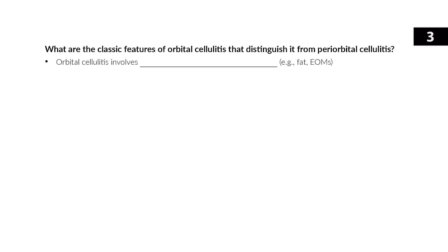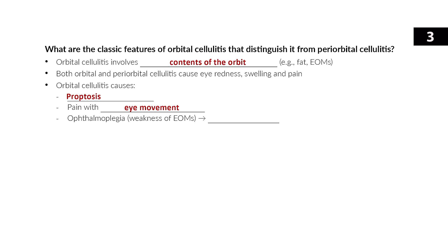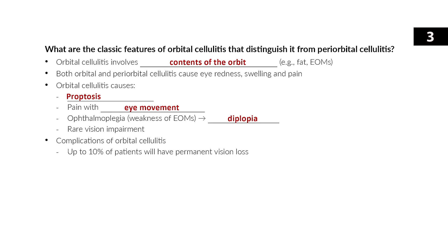Infection of the tissue around the eye can be orbital cellulitis or periorbital cellulitis. Periorbital cellulitis involves just the skin in front of the eye like the eyelid, while orbital cellulitis involves the contents of the orbit itself — the fat and extraocular muscles. Both present with redness, swelling, and pain, but orbital cellulitis may also cause proptosis, pain with eye movement, ophthalmoplegia, diplopia, and rarely impaired vision. Up to 10% of patients will have permanent vision loss and 1–2% may die.